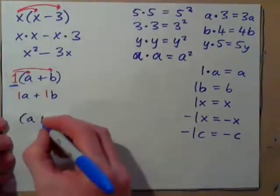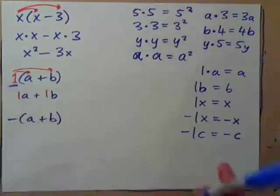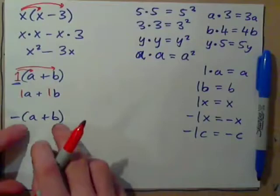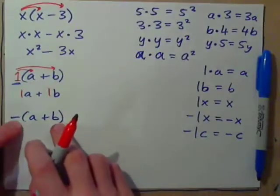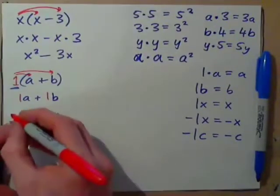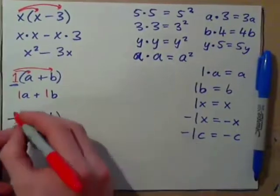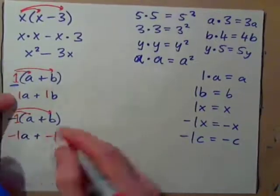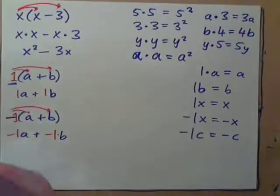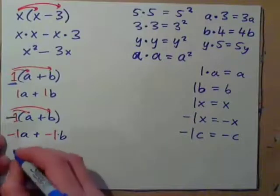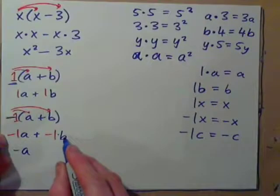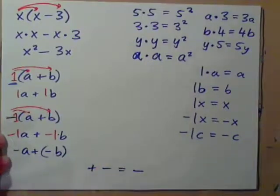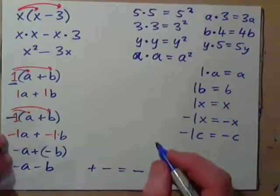What if we had (apple plus banana) in parentheses with a negative sign on the outside? That means subtract one bag — multiply everything by negative 1. We get negative 1 times a plus negative 1 times b. Negative 1a is just negative a, and plus negative 1b is negative b. Plus negative is the same as subtract, so this can be written negative a minus b.